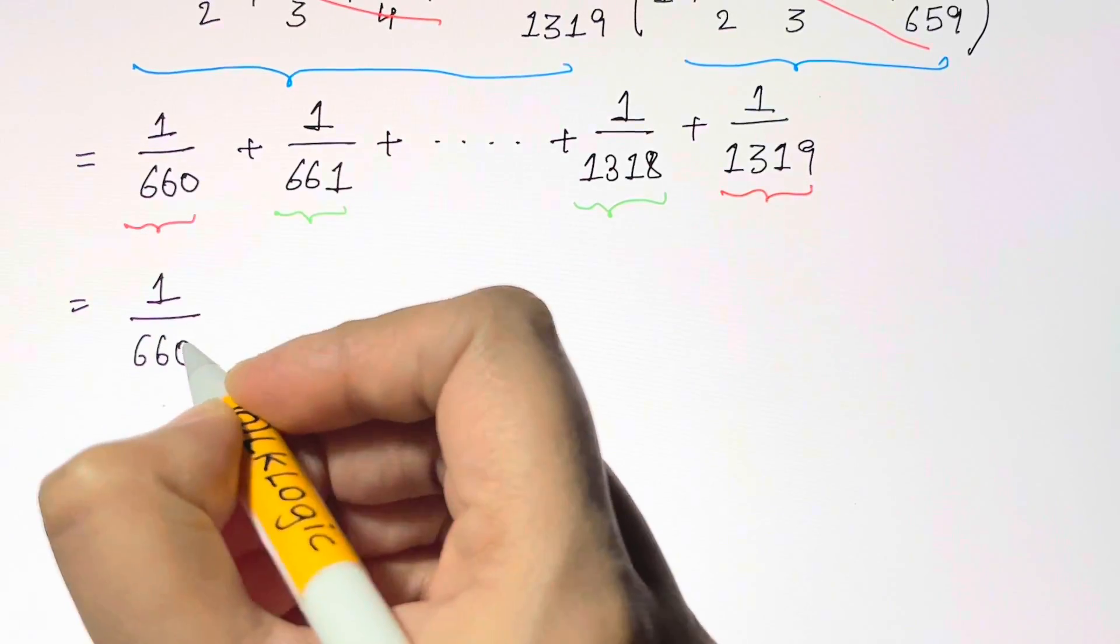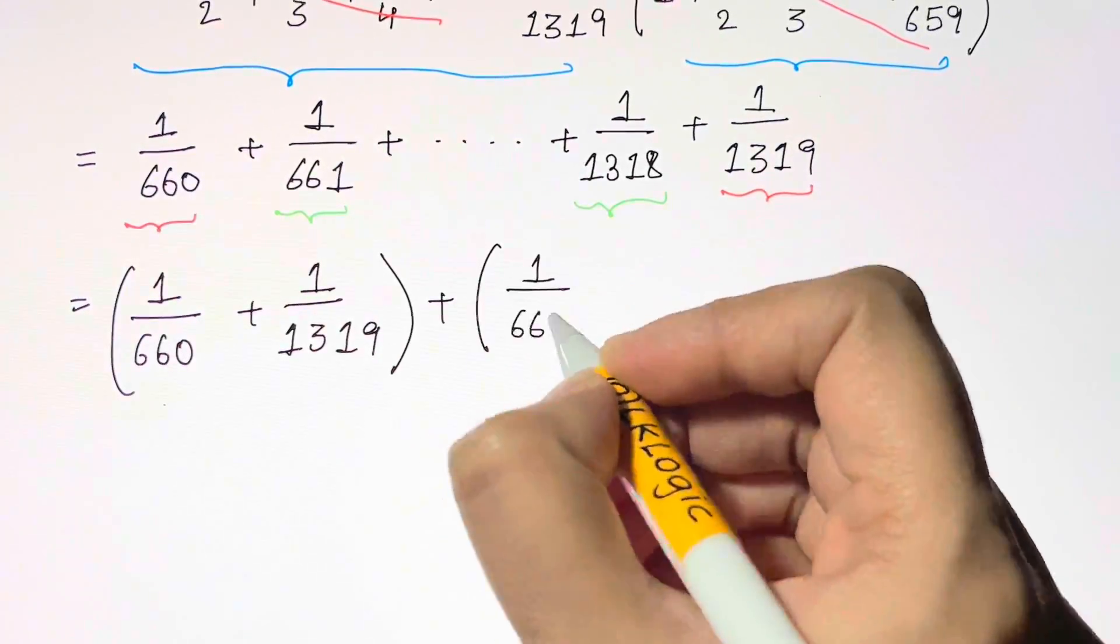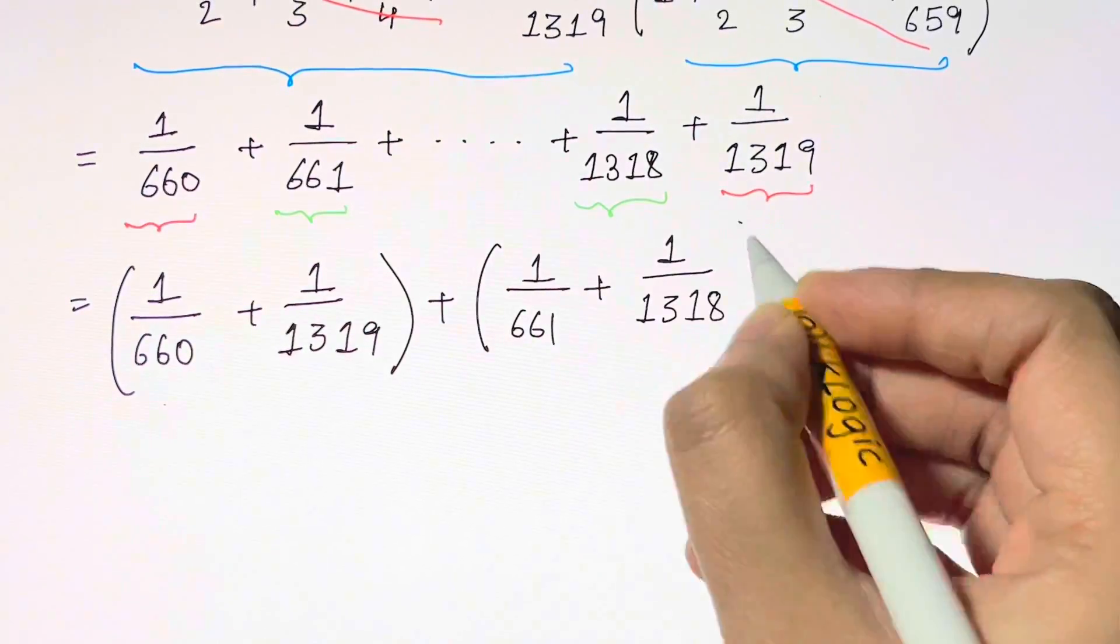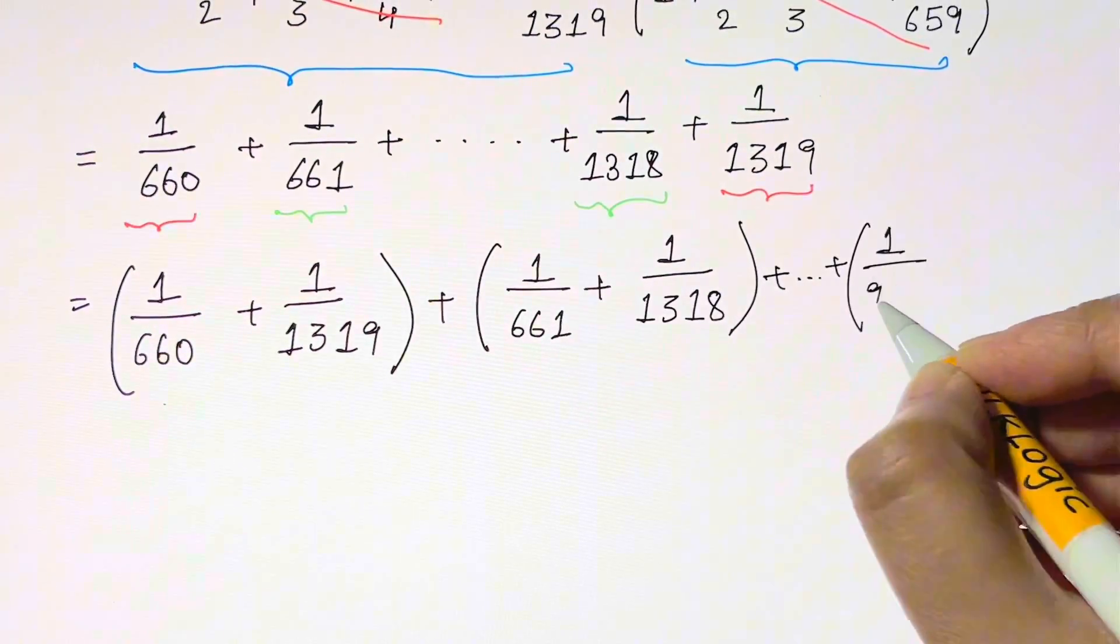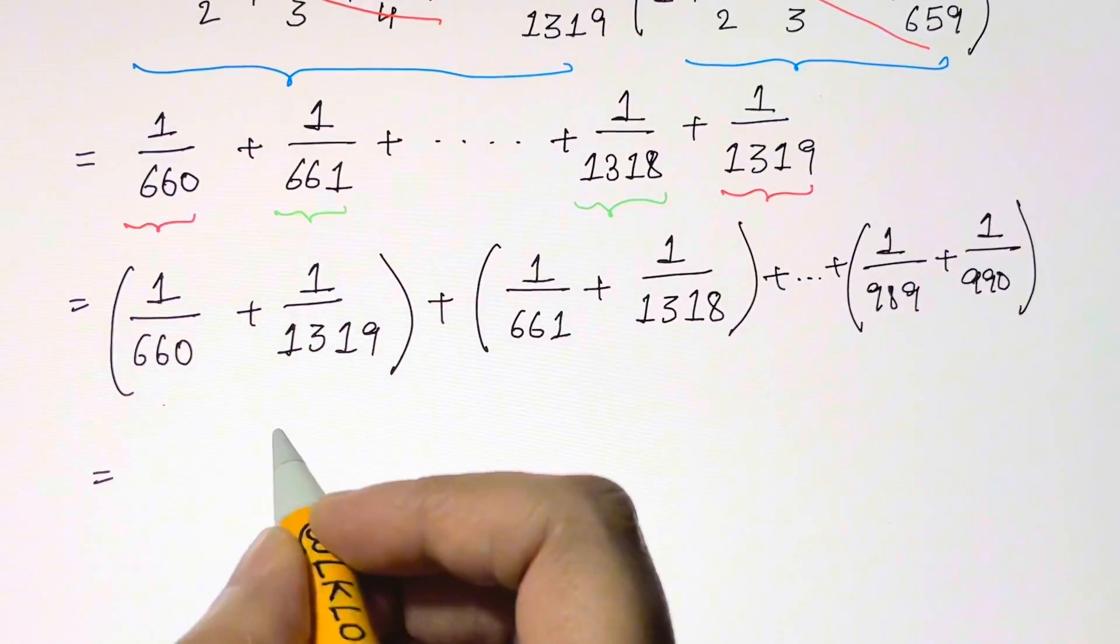We're going to get 1 over 660 plus 1 over 1319 as a pair, plus 1 over 661 plus 1 over 1318 as a pair, and so on till 1 over 989 plus 1 over 990.